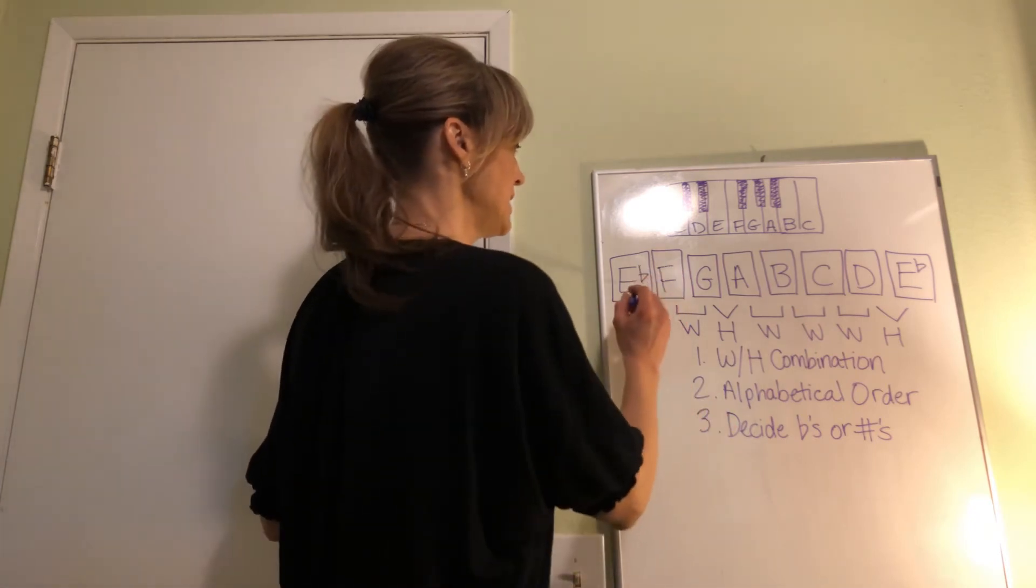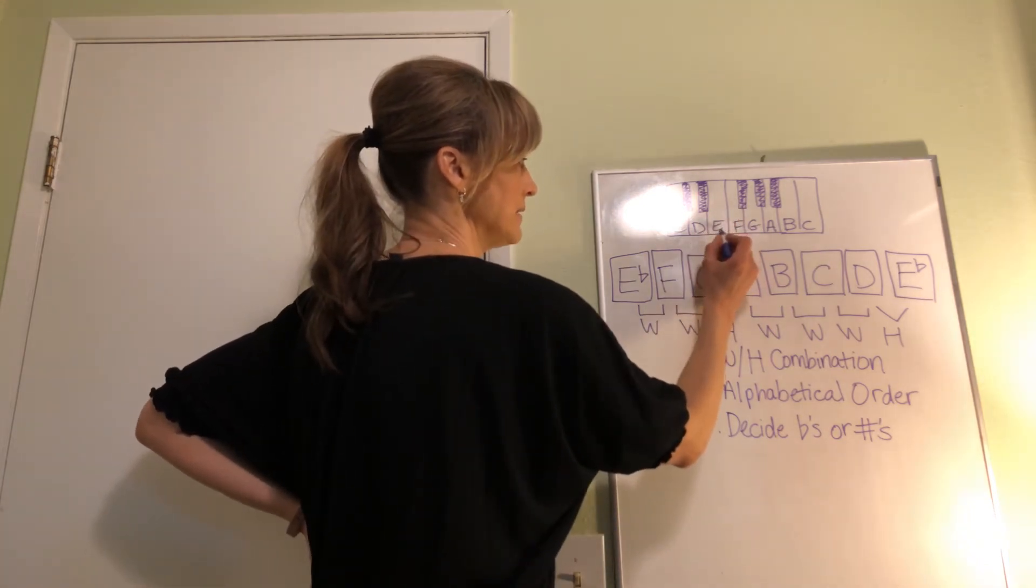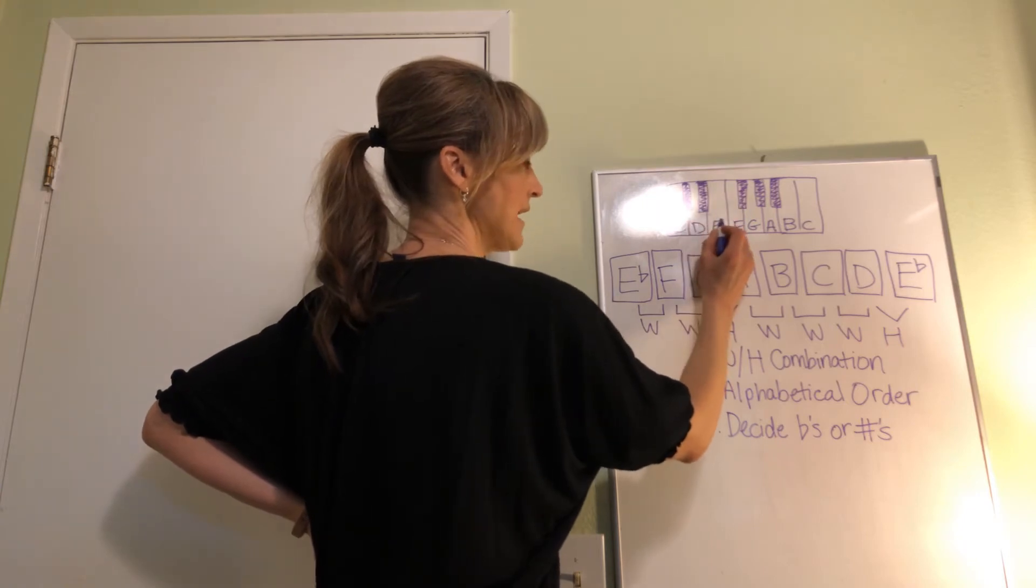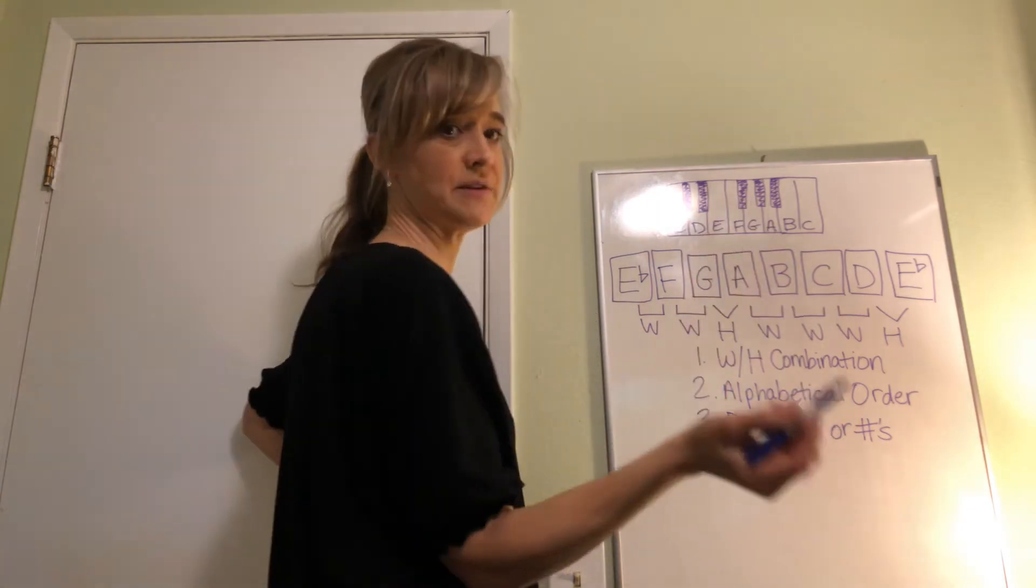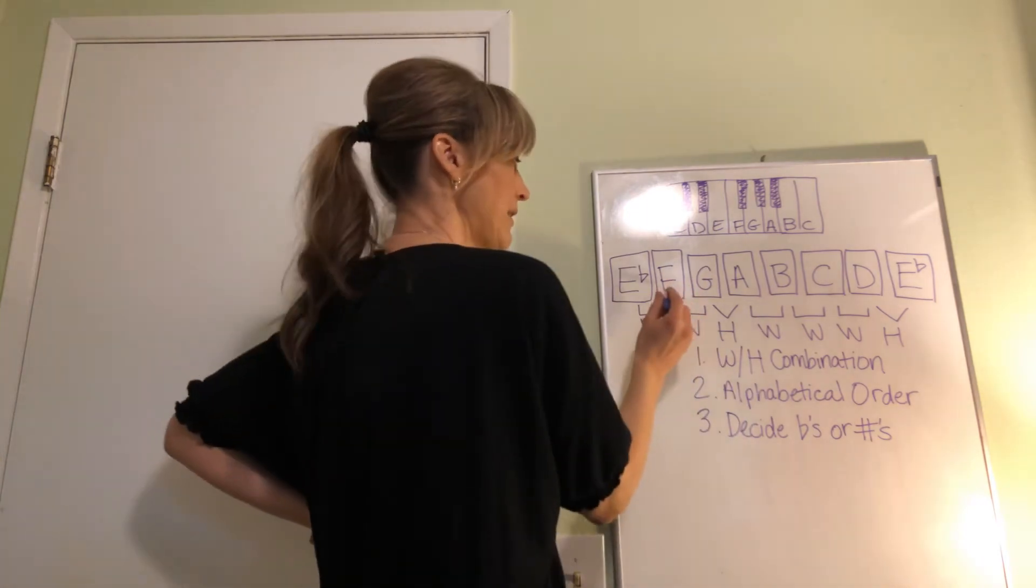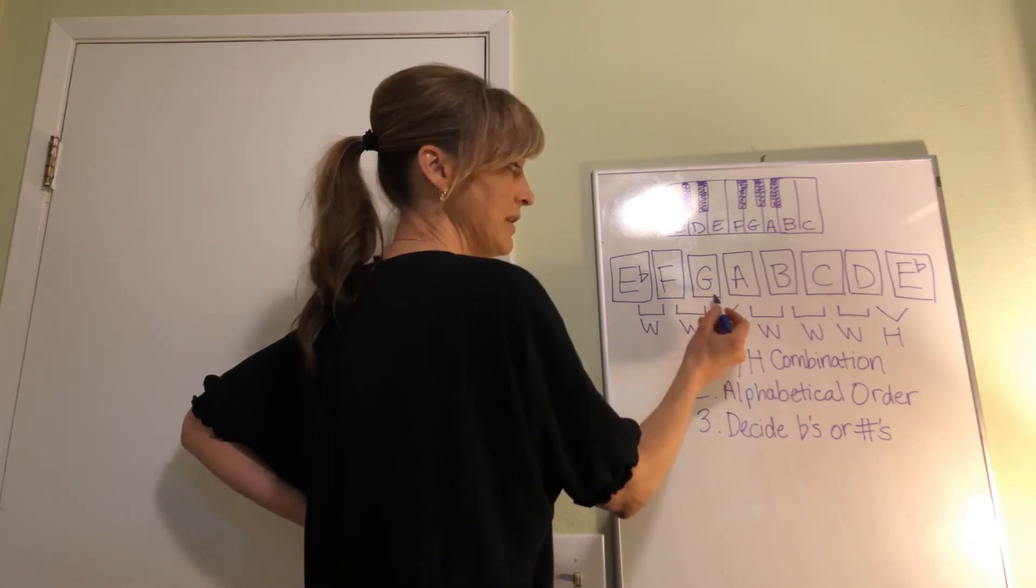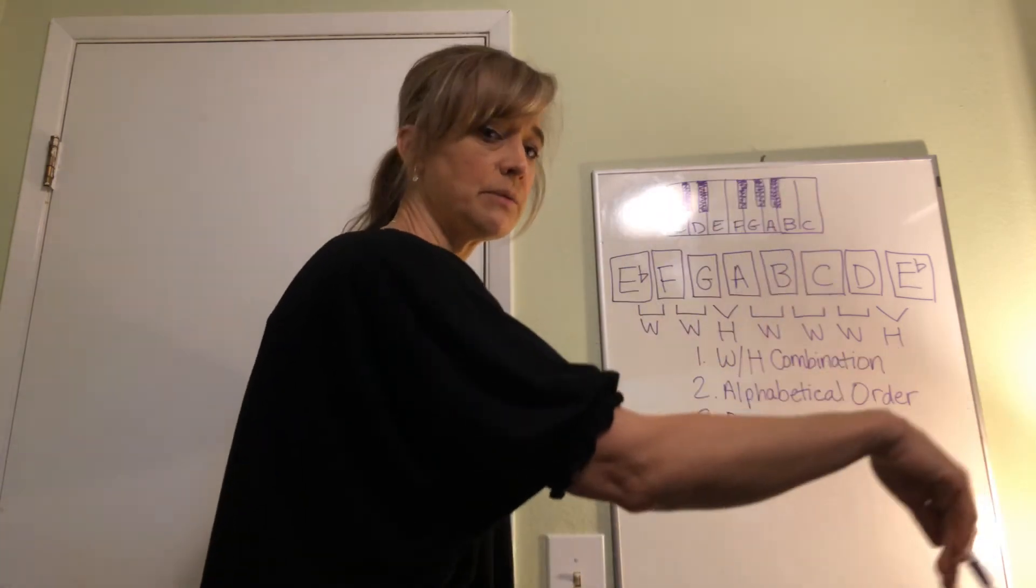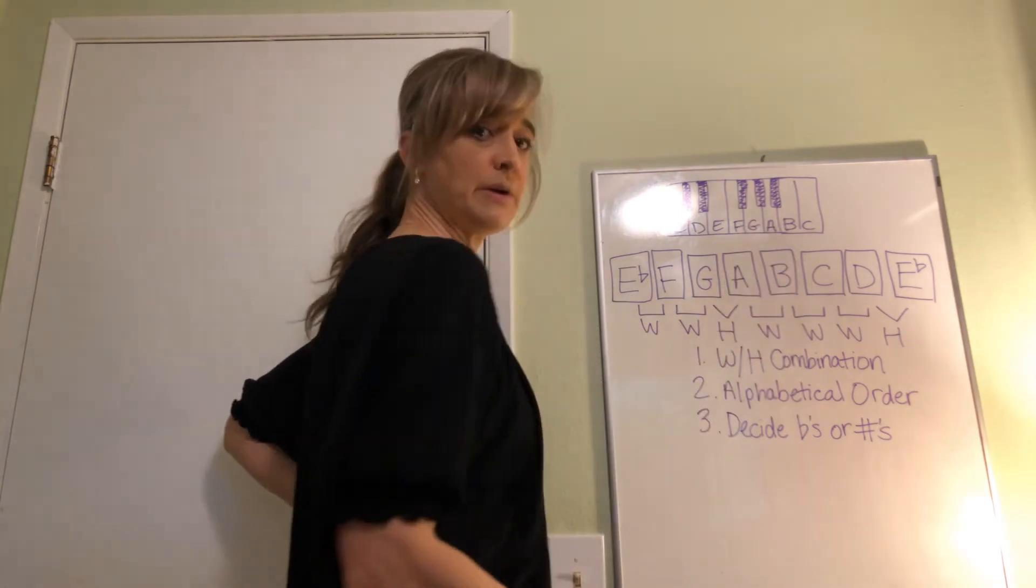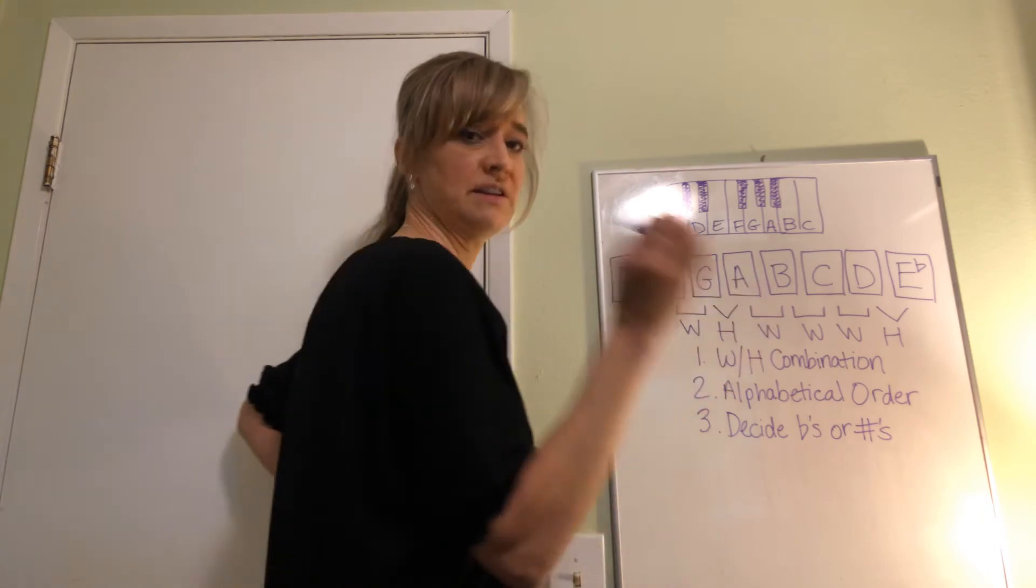So here we go. E-flat to F - is that a whole step? Here's E-flat. E-flat to E is a half step. E to F is a half step. Two half steps make a whole step. We don't change F. So now F is locked. Now the only thing we can change is everything going forward. So F to G. F to G has a black key in between, so it is a whole step. So now G is locked.